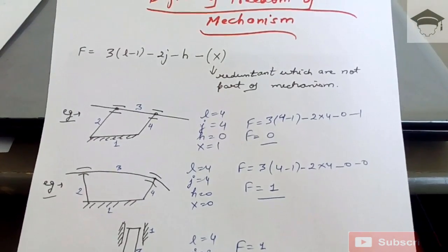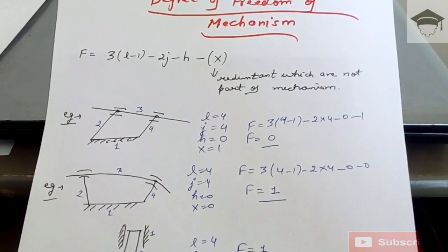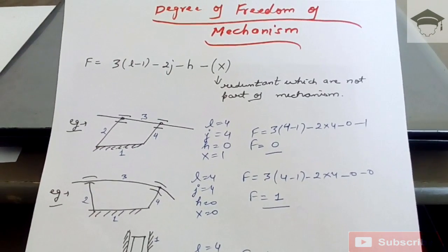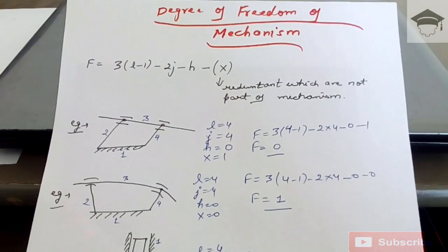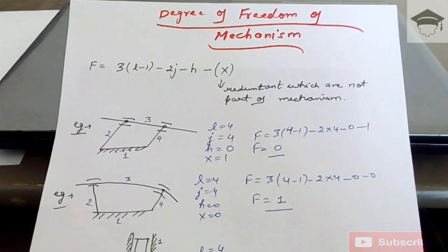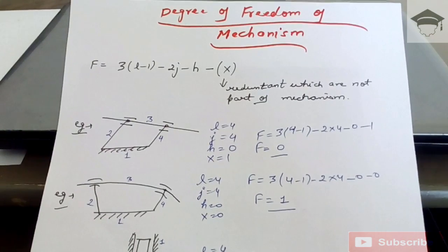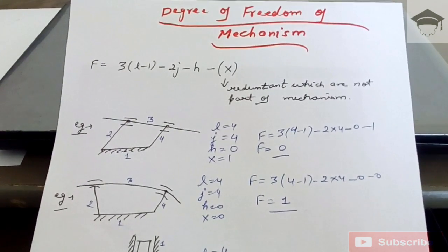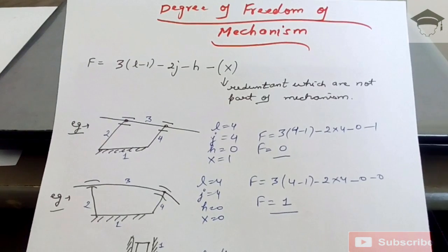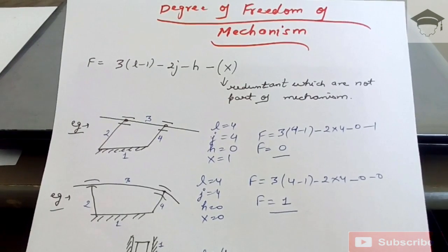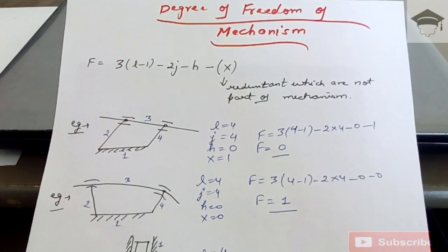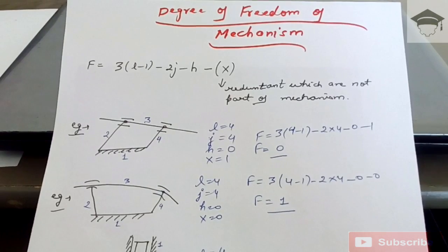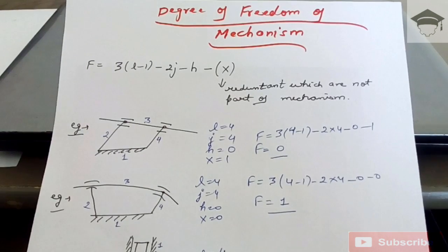Hello guys and welcome to my channel. In this video I will be explaining how you can find out the degree of freedom of mechanisms, using many examples so that the fundamental of finding the degree of freedom is clear. We will be using the Kutzberg equation: degree of freedom equals 3(l − 1) − 2j − h − x.